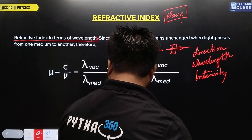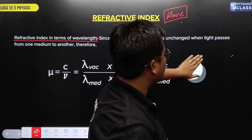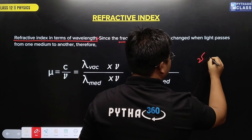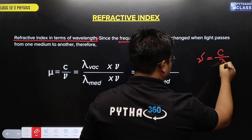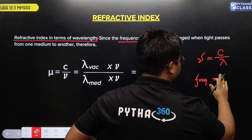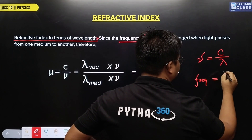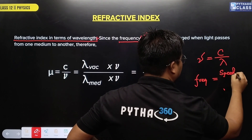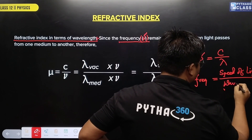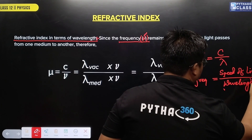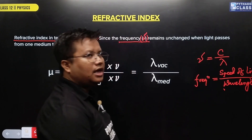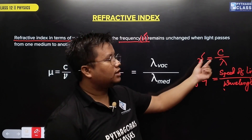The formula is: frequency equals C by lambda. That means frequency is equal to the speed of light divided by wavelength. So if frequency does not change, mu equals C by lambda.